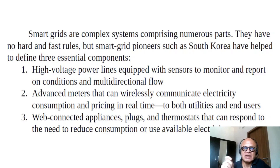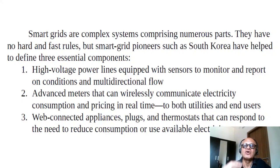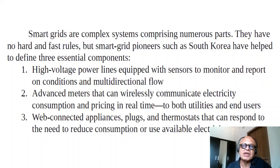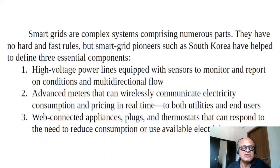Users can be putting energy in when they have access, or taking energy when they need it and don't have solar or wind available. The second component is advanced meters that can wirelessly communicate electricity consumption and pricing in real time to both utilities and end users. Third are web-connected appliances — an Internet of Things concept — plugs and thermostats that can respond to the need to reduce consumption or use available electricity.